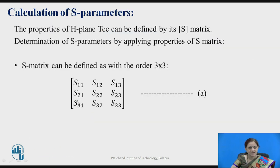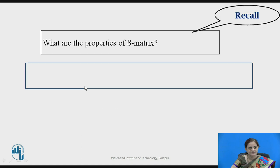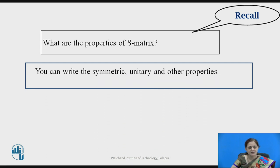How to calculate the scattering parameters for H-Plane T-Junction? You can use the scattering matrix properties. The properties of H-Plane T can be defined by its scattering matrix. The order of the matrix is 3 by 3, and therefore it can be defined with equation A, having scattering parameters S11, S12, S13, defined with the row and column number. Before going further, you can pause the video here and recall the properties of the scattering matrix, such as the symmetric property, unitary property, and other properties.